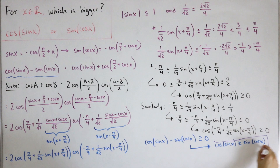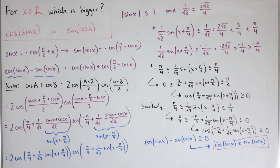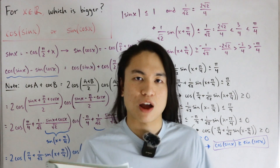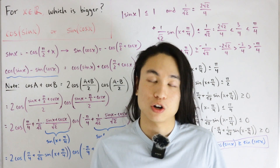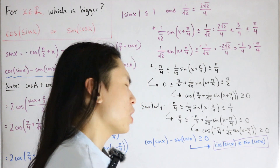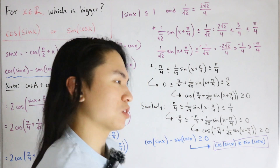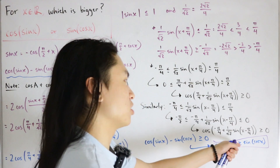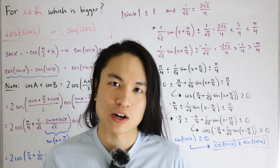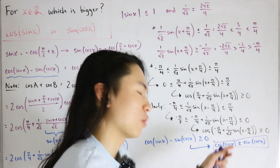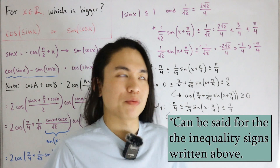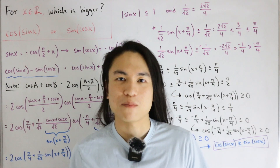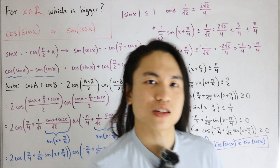So we conclude that cosine of sine of x is bigger than sine of cosine of x. We can actually graph the two functions to verify — and looking at the graph, there's no point where they actually intersect, so really the inequality is strictly greater than zero. In other words, cosine of sine of x is strictly greater than sine of cosine of x. That's pretty cool!